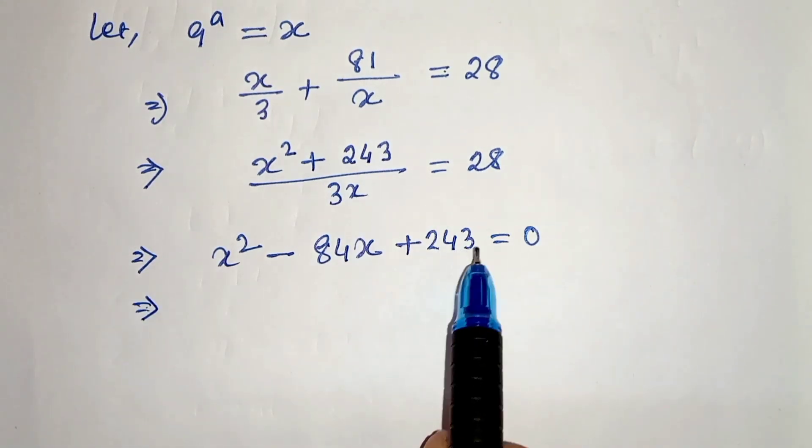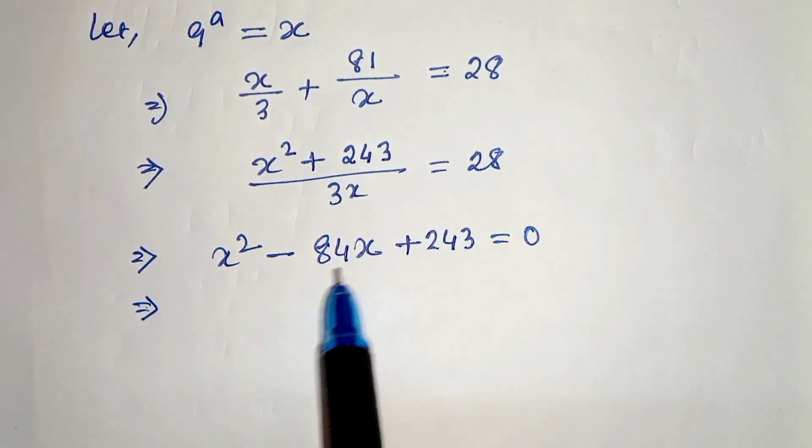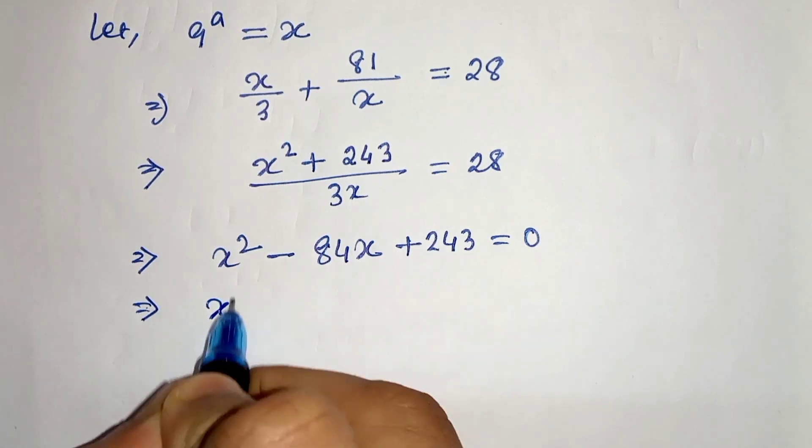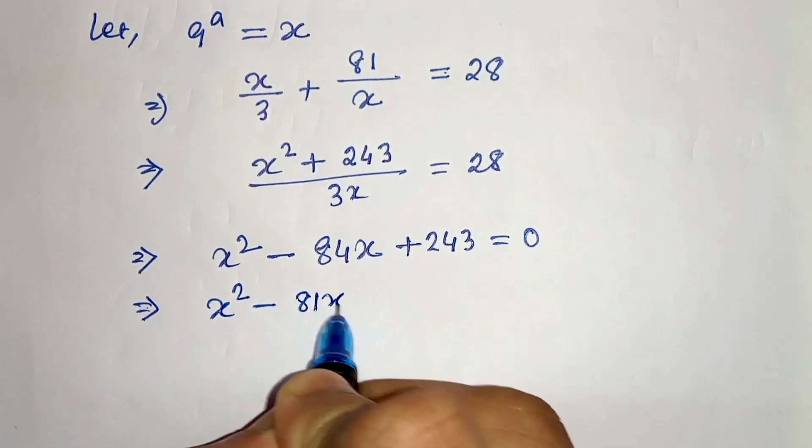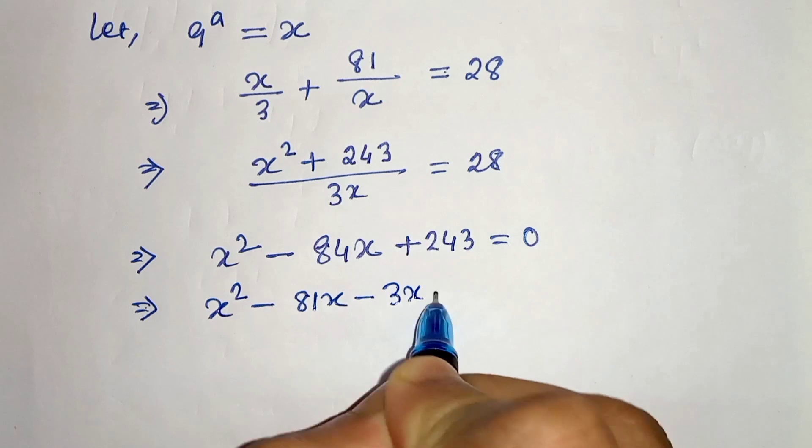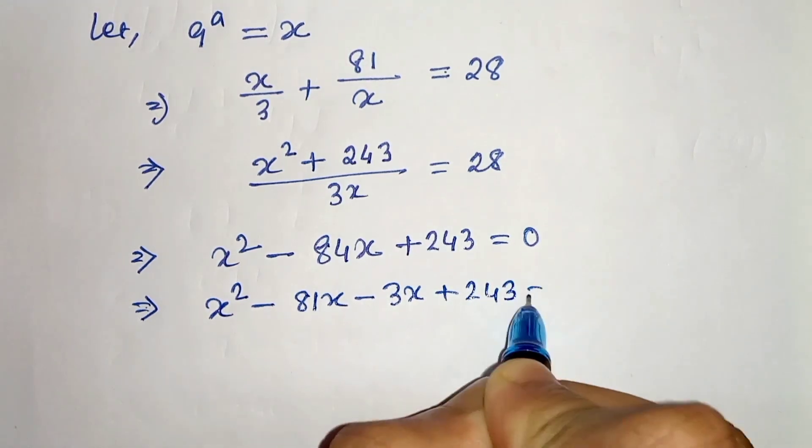Now we have to factorize this. Here our product is 243 and sum is minus 84, so we will take x squared minus 81x minus 3x plus 243 equals 0.